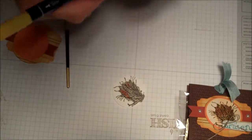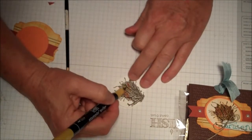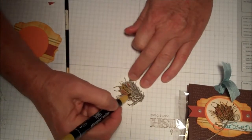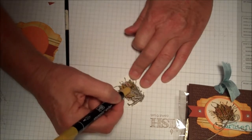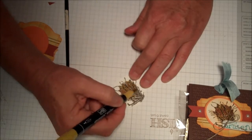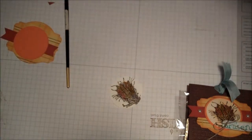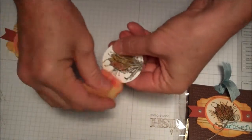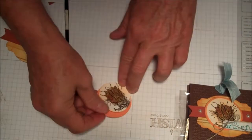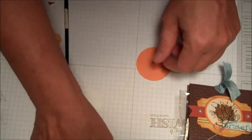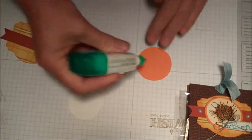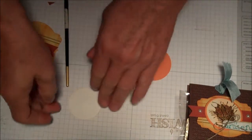I have two pens, Crushed Curry and Pumpkin Pie, and I'm just going to fill in some of this wheat using the brush tip. Then sponge it a little bit. We're going to lay it up on the Pumpkin Pie circle.